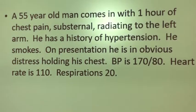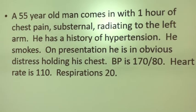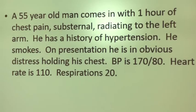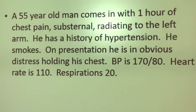A 55-year-old comes in with one hour of chest pain, substernal — that means underneath the sternum — radiating to the left arm. He has a history of hypertension. He smokes. On presentation, he's in obvious distress holding his chest. Blood pressure is 170 over 80, heart rate is 110, respiration is 20.